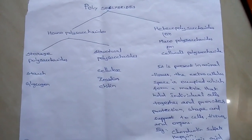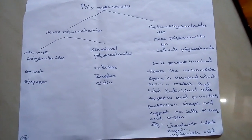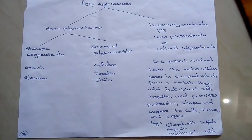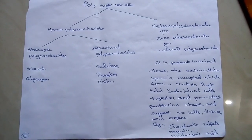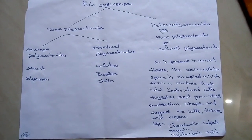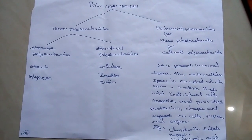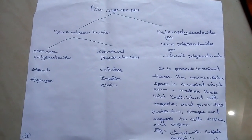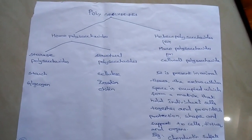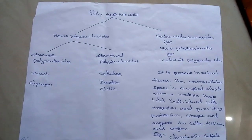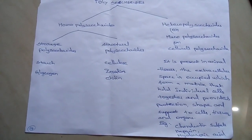Third one: Polysaccharides. Polysaccharides means it contains ten or more monosaccharide units on hydrolysis. It is classified into two types: homopolysaccharides and heteropolysaccharides. Homopolysaccharides means the same sugar molecules are present on hydrolysis. They are classified into two types: storage polysaccharides, for example starch and glycogen, and structural polysaccharides, for example cellulose and chitin. Heteropolysaccharides are defined as different sugar molecules present on hydrolysis, also called mucopolysaccharides or complex polysaccharides. They are present in animal tissues, where the extracellular space is occupied forming a matrix that holds individual cells together and provides protection, shape and support to cells, tissues and organs. Examples: chondroitin sulphate, heparin and hyaluronic acid.